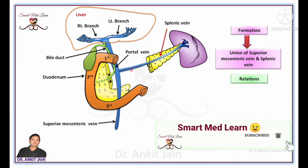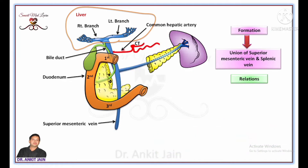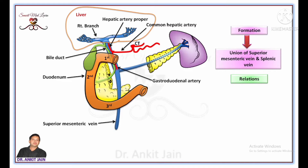One of the branches of the celiac trunk is known as common hepatic artery. This common hepatic artery divides into hepatic artery proper and gastroduodenal artery. Hepatic artery proper moves upward in front of the portal vein, while gastroduodenal artery runs downward behind the first part of the duodenum but in front of the portal vein.